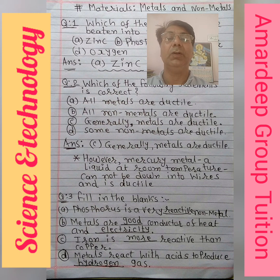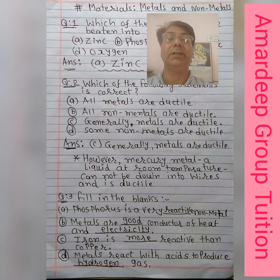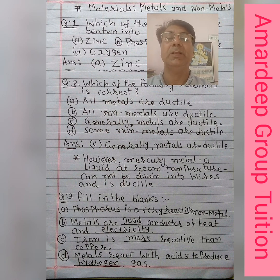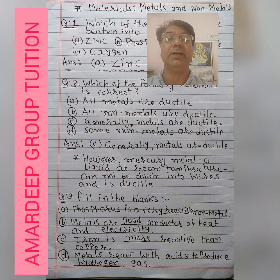Third option is: generally metals are ductile. The fourth option is: some non-metals are ductile.